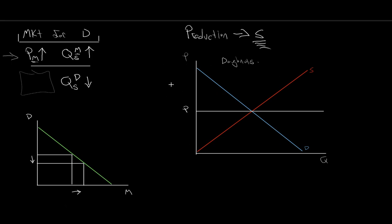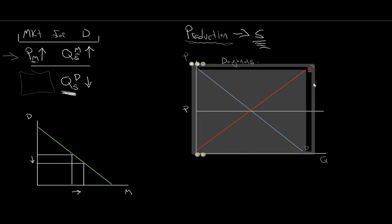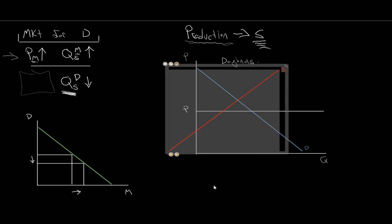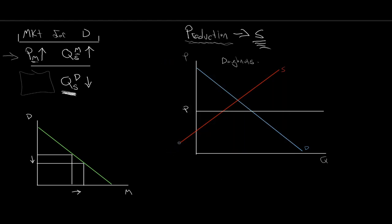Our production possibility frontier is set up to represent substitutes — donuts and muffins. If I started off producing some combination, and due to this increase in the price of muffins I'm now making more muffins, by making more muffins I must be having fewer donuts. So on the production side, my supply is shifting to the left. As supply shifts to the left, we get a disequilibrium. What used to be my quantity exchanged is now just my quantity demanded, and my new quantity supplied is lower.